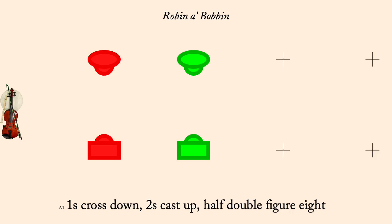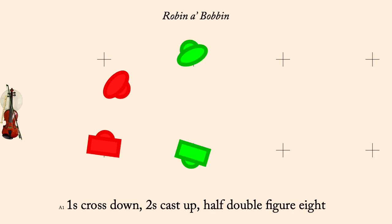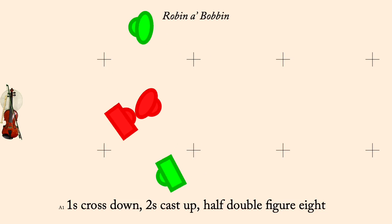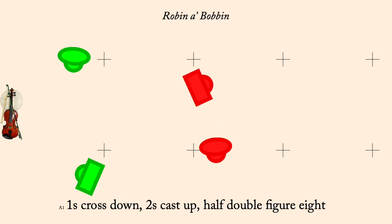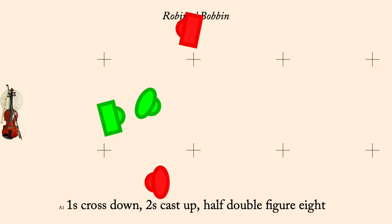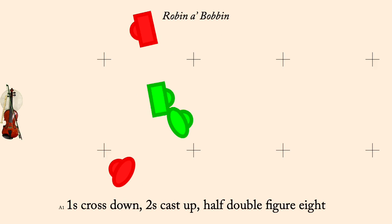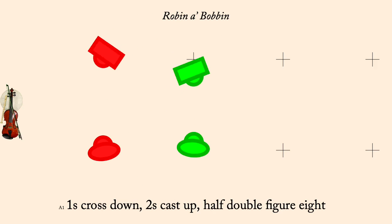Ones cross down, twos cast up, half double figure eight. Partner two-hand turn.